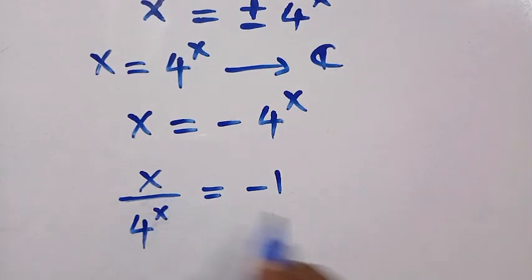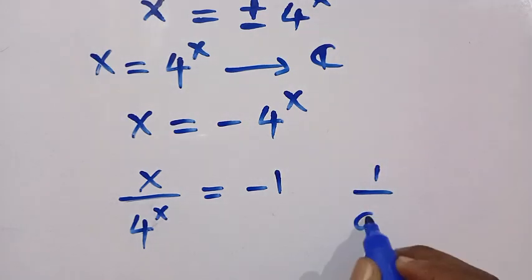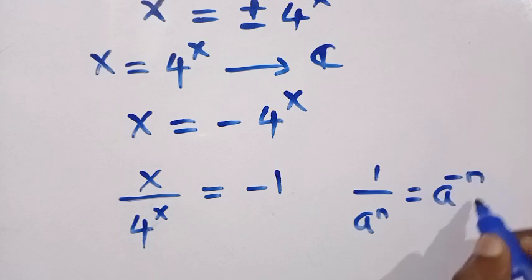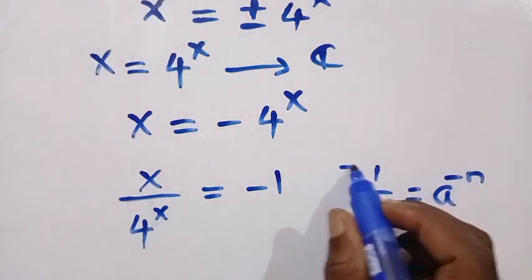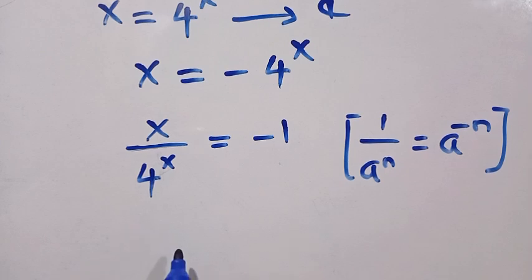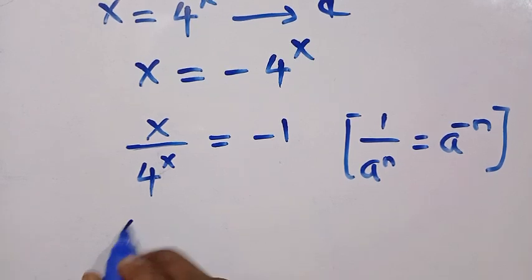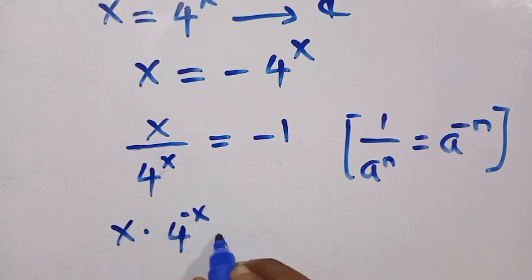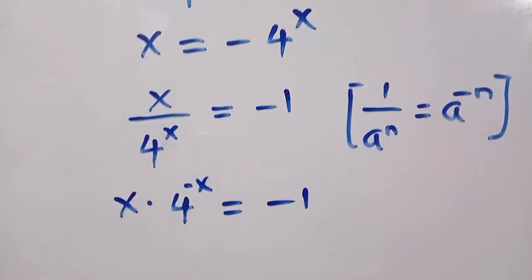Using the exponent rule — dividing by 4^x is the same as multiplying by 4^(−x) — we rewrite the equation as x multiplied by 4 to the power of minus x equals minus 1.